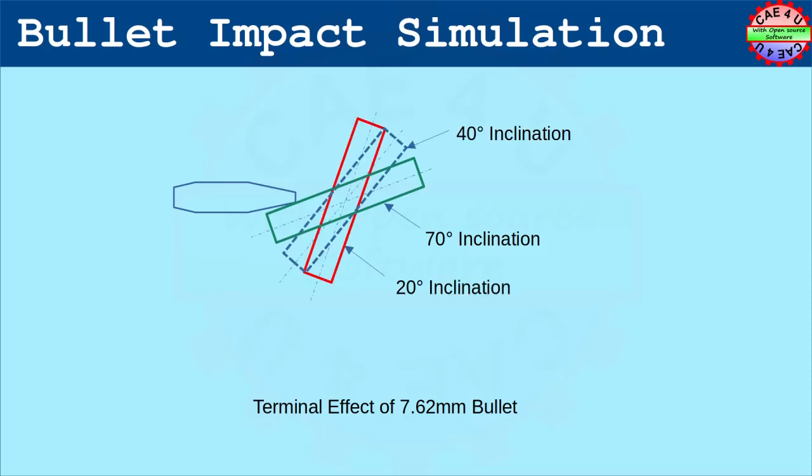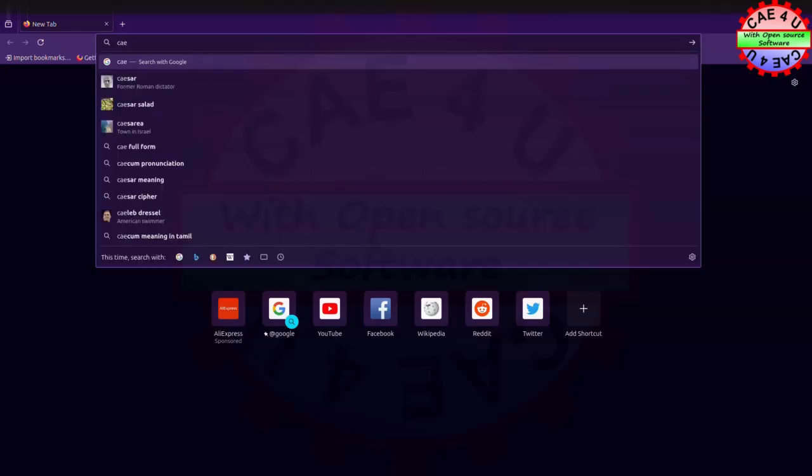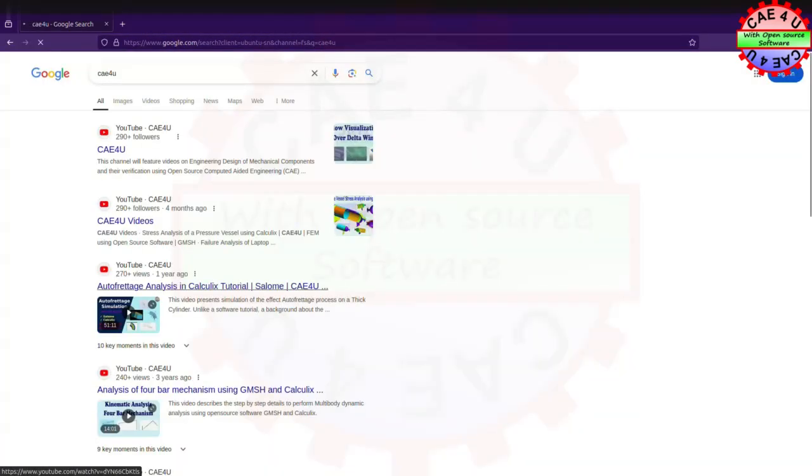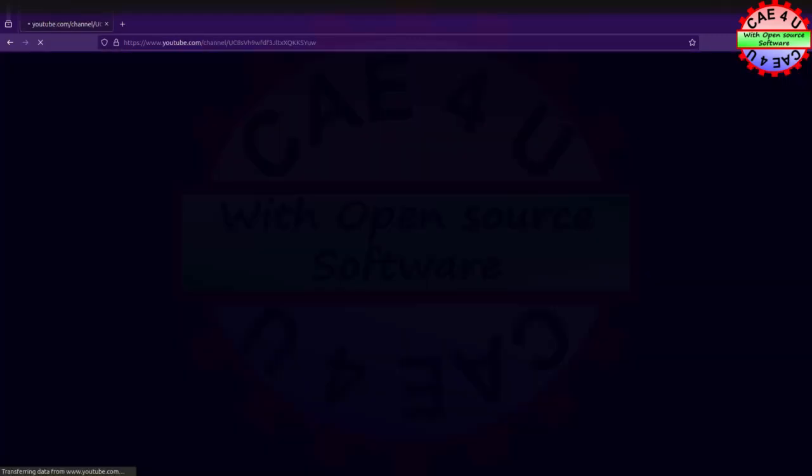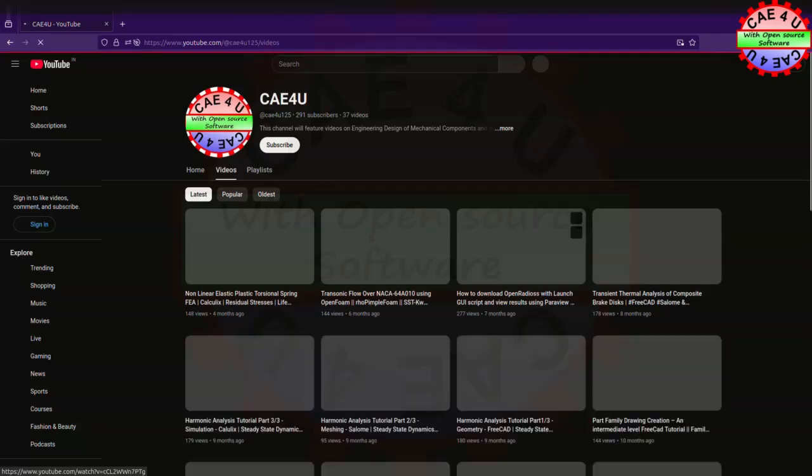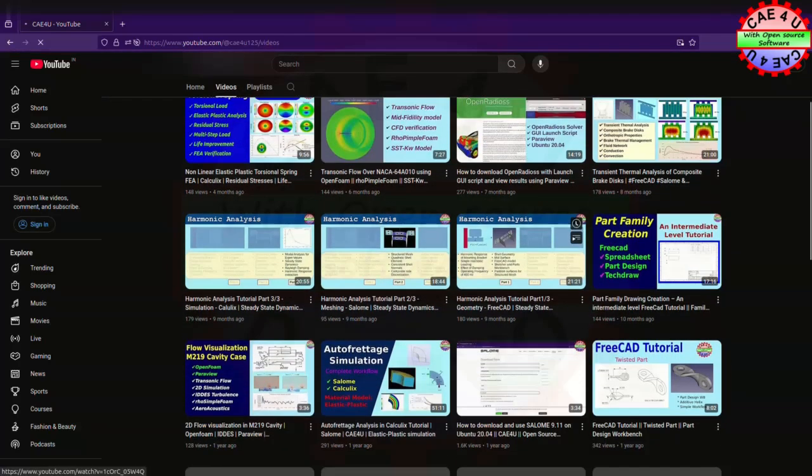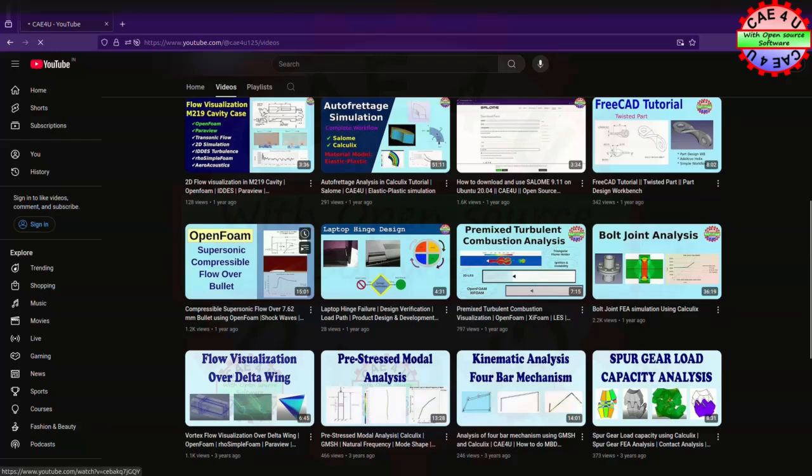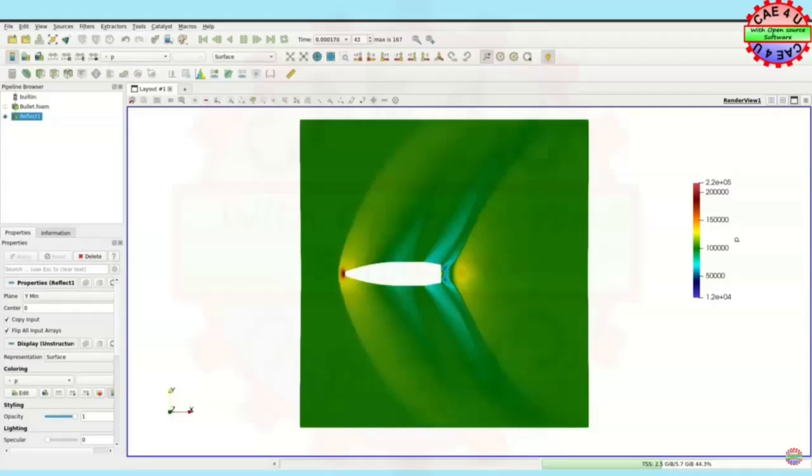Before we go further, we would like to refer our video which we posted sometime back simulating the aerodynamic characteristics of 7.62 mm bullet. You can watch it visiting our YouTube page or the link provided in the description. Our current video is actually an extension of the aerodynamic analysis on understanding the terminal impact of such a projectile.